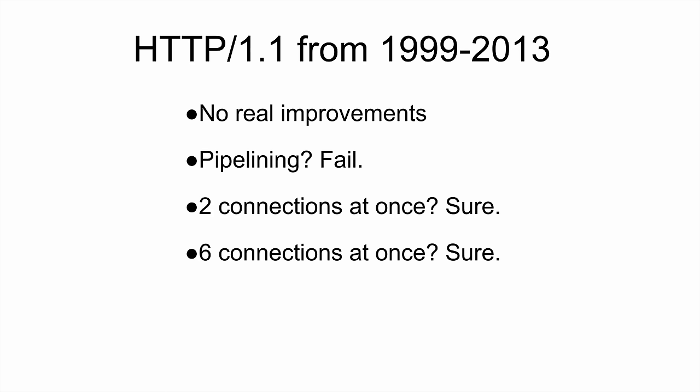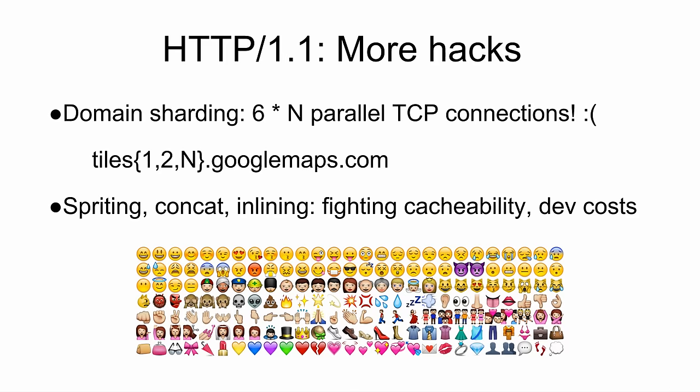From 1999 to basically 2013, nothing really happened with HTTP. People tried to do pipelining with HTTP 1.1 but that didn't really work, so people started just increasing the number of connections you could do at a time. Browsers first permitted two connections to a server, then it was six. People started doing hacks — if you needed more than six connections you'd just start making up new hostnames. People started concatenating all their images — spriting images together, concatenating JavaScript and CSS — so you didn't have to do lots of requests to the server.